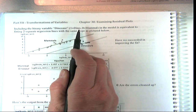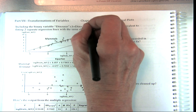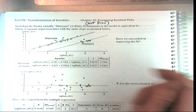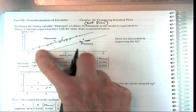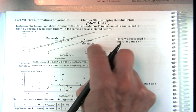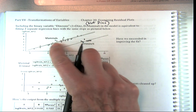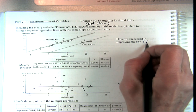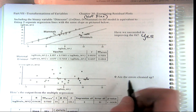The binary variable dinos is 1 if it's a dinosaur and 0 if it's not — it's a mammal. That's how it's coded. And that's equivalent to doing two separate regression lines. You can see how we improve the fit. We get two separate equations, and you can see how the errors are cleaned up — they look a whole lot better.